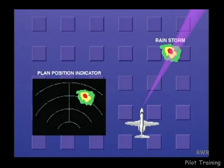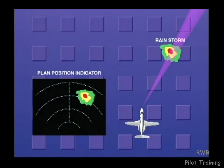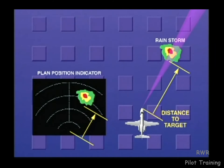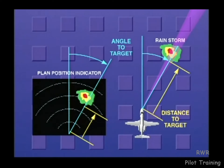The pulse of energy transmitted from the radar antenna is in the form of electromagnetic microwave energy. Its frequency of operation is 9.3 billion cycles per second, and it travels through space at the speed of light. The distance to a target is determined by measuring the round-trip travel time of the pulse. The direction to the target is the direction the antenna is pointing when it receives the target's echo.